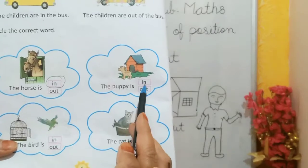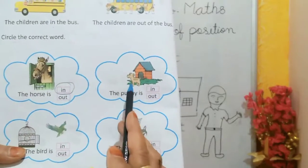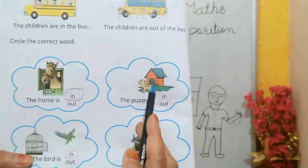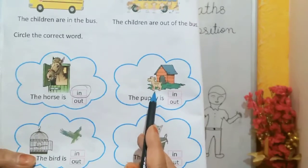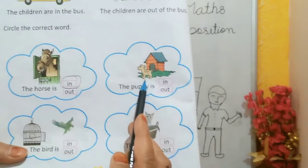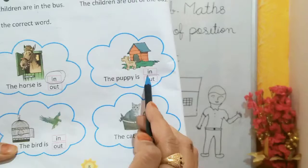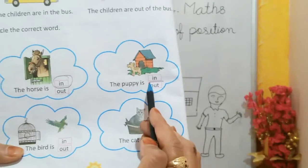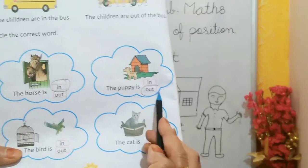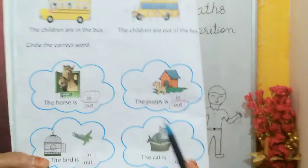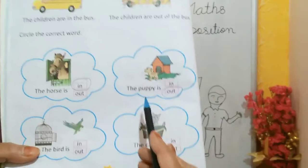Now look here: the puppy — P-U-P-P-Y — is in or out? Look here, the puppy is out of the canal. So we will circle the out word. Understood, students.